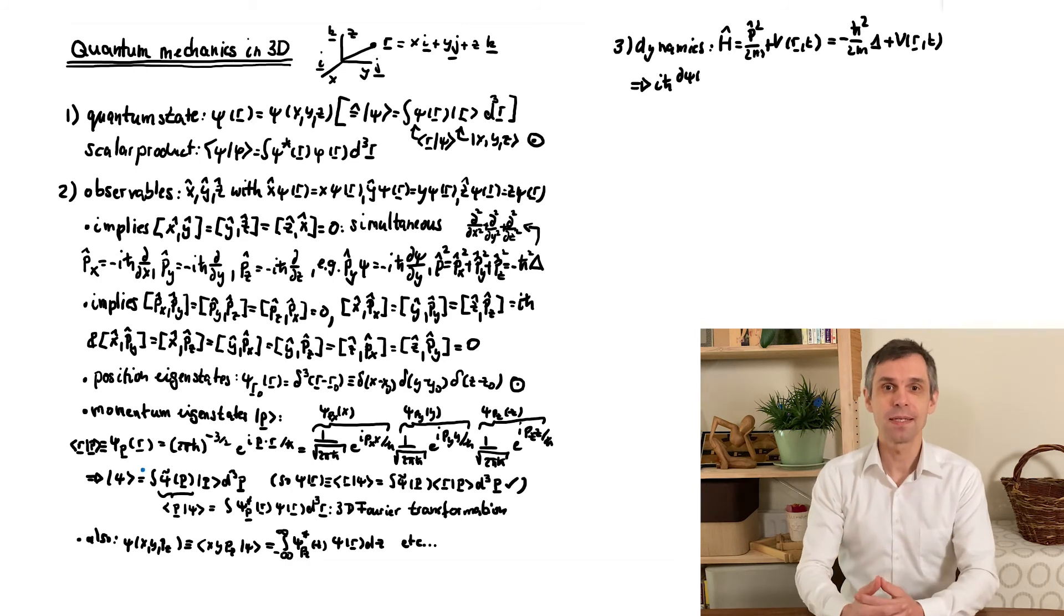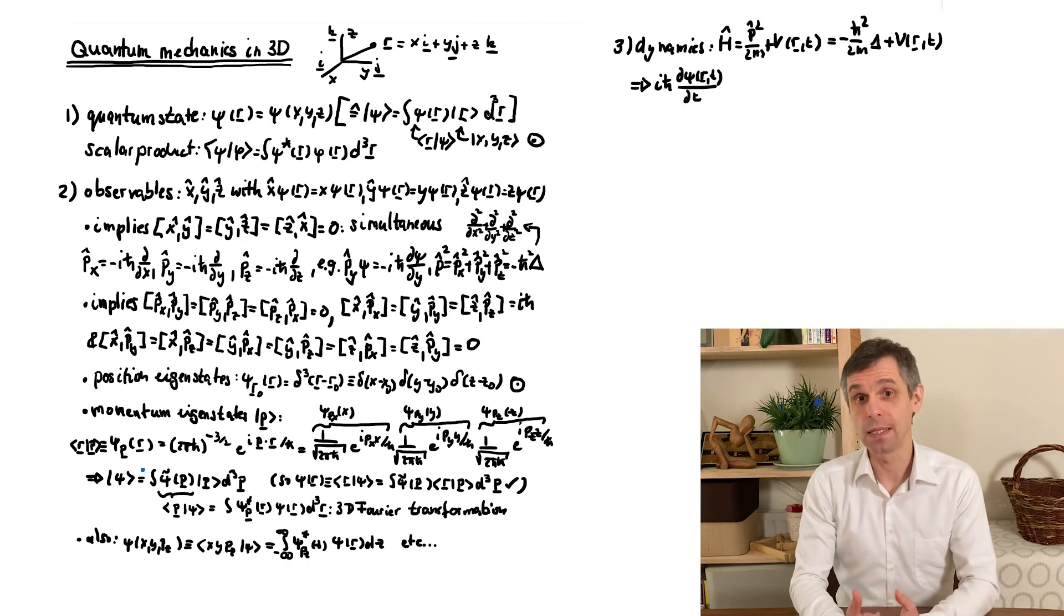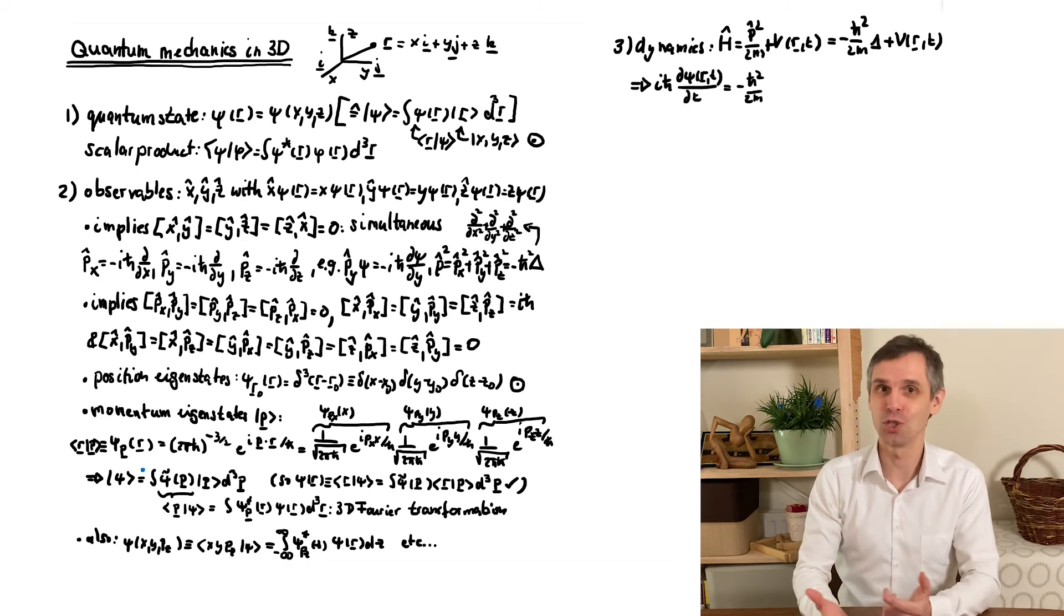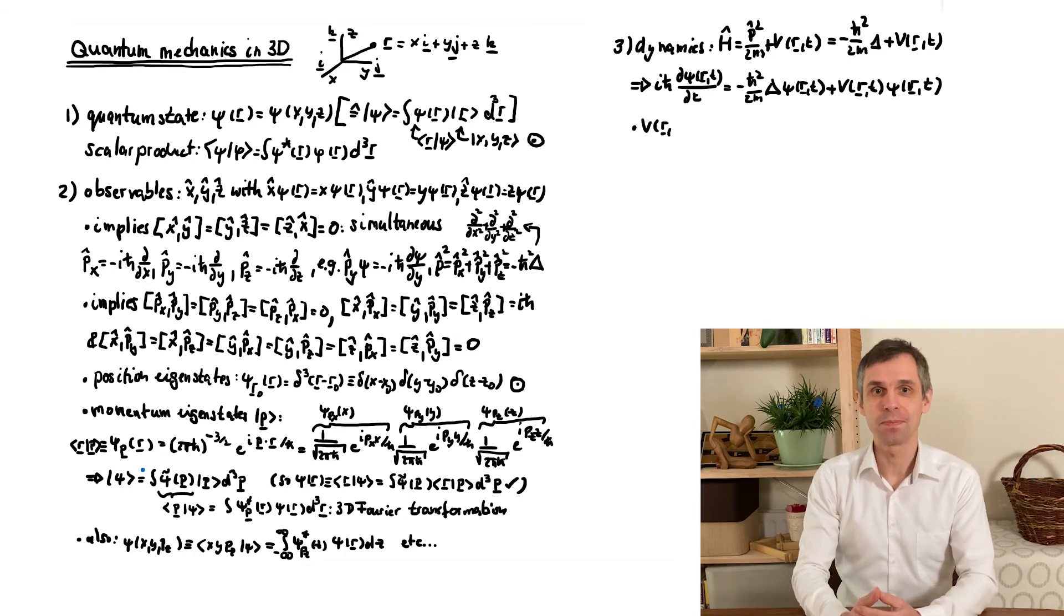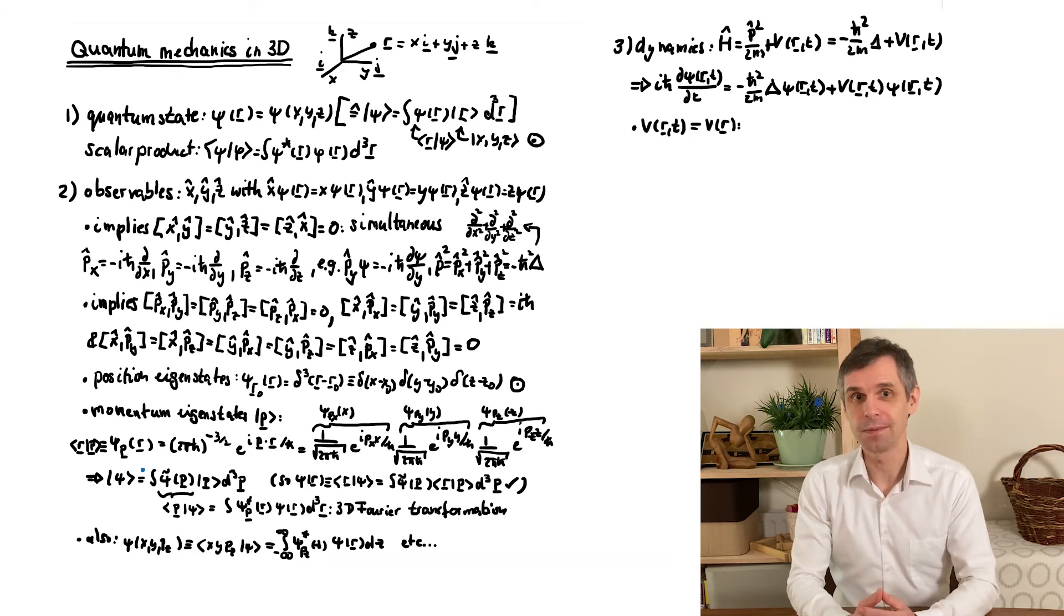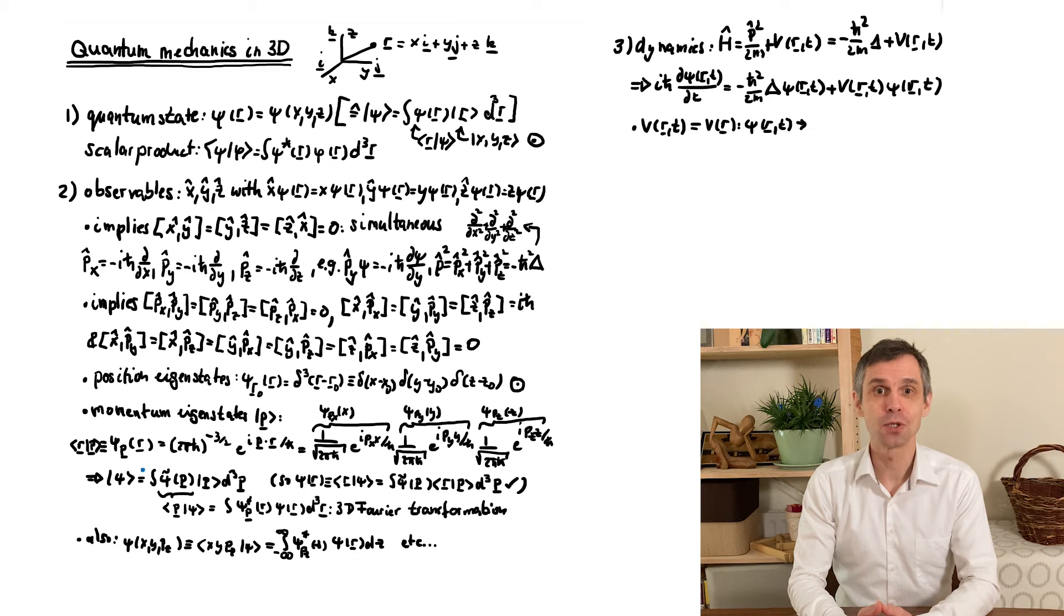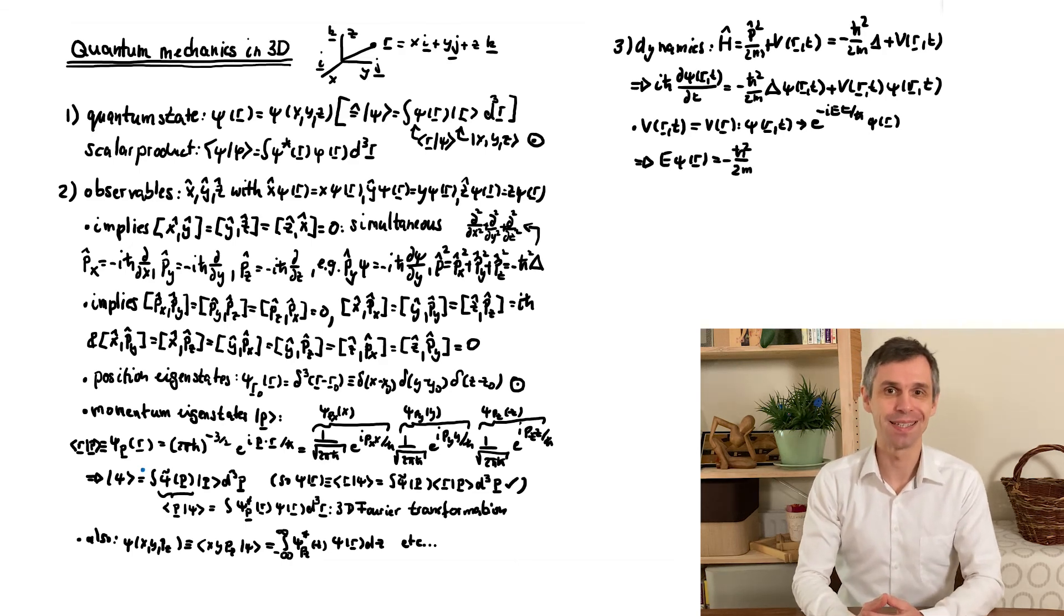So, in the general case, the Hamiltonian here then describes the dynamics according to the time-dependent Schrödinger equation. However, in the present chapter, the potential will be independent of time and so we can instead solve the stationary Schrödinger equation. In all of these expressions, delta again denotes the Laplace operator.